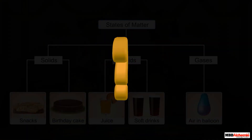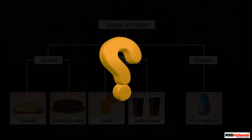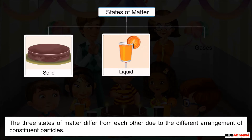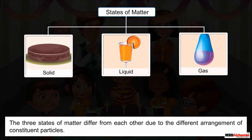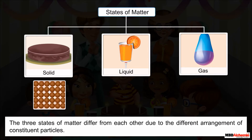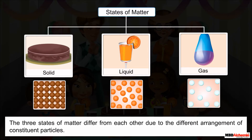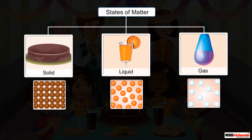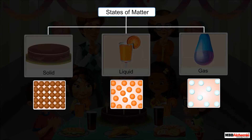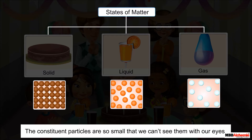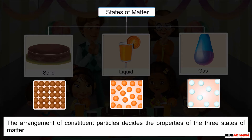The three states of matter differ from each other due to the different arrangement of constituent particles in them. All matter — be it solid, liquid, or gas — is made of very small particles. These particles are so small that we cannot see them with our eyes, and it is their arrangement that decides the properties of each state.